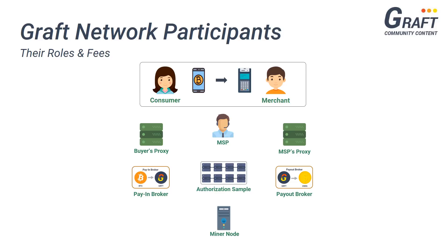In order for a merchant to begin processing cryptocurrency transactions through a traditional hardware terminal, the merchant will likely require the use of a merchant service provider. Merchant service providers are a very important part of the payment industry that provide merchants with all the necessary software and hardware tools to process transactions and run a successful business. They also provide any necessary customer support. On the Graft network, the merchant service provider will also act as the payment gateway, allowing communication between the merchant's hardware terminal and the rest of the payment network. A merchant service provider normally charges a fee of around 0.2% to 0.3% plus a few cents per transaction, but we'll use a flat fee of around 0.4%.